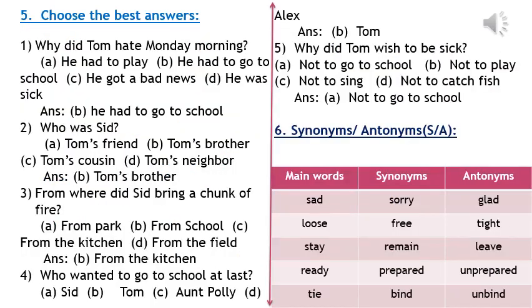Now choose the best answer. Question number one: Why did Tom hate Monday morning? Options: he had to play, he had to go to school, he caught a bad view, or he was sick. Answer: he had to go to school. Question number two: Who was Sid? Sid was Tom's brother.